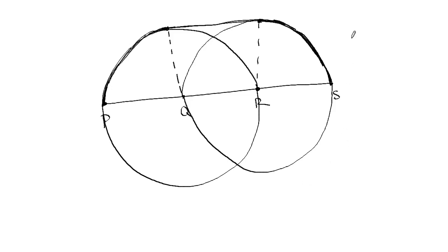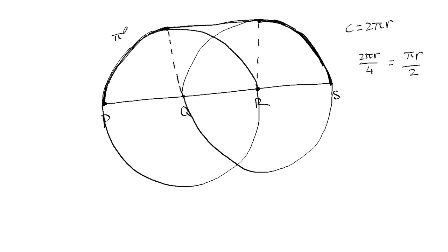The circumference of a full circle is 2 pi R, and the radius here is 1, so it's 2 pi. A quarter of the way around the circle is 2 pi R over 4, which simplifies to pi R over 2, and since R is 1, each quarter-circle arc is pi over 2. The straight section between the two circles is 1 meter (from Q to R). So the total path is pi over 2 plus 1 plus pi over 2, which makes 1 plus pi.